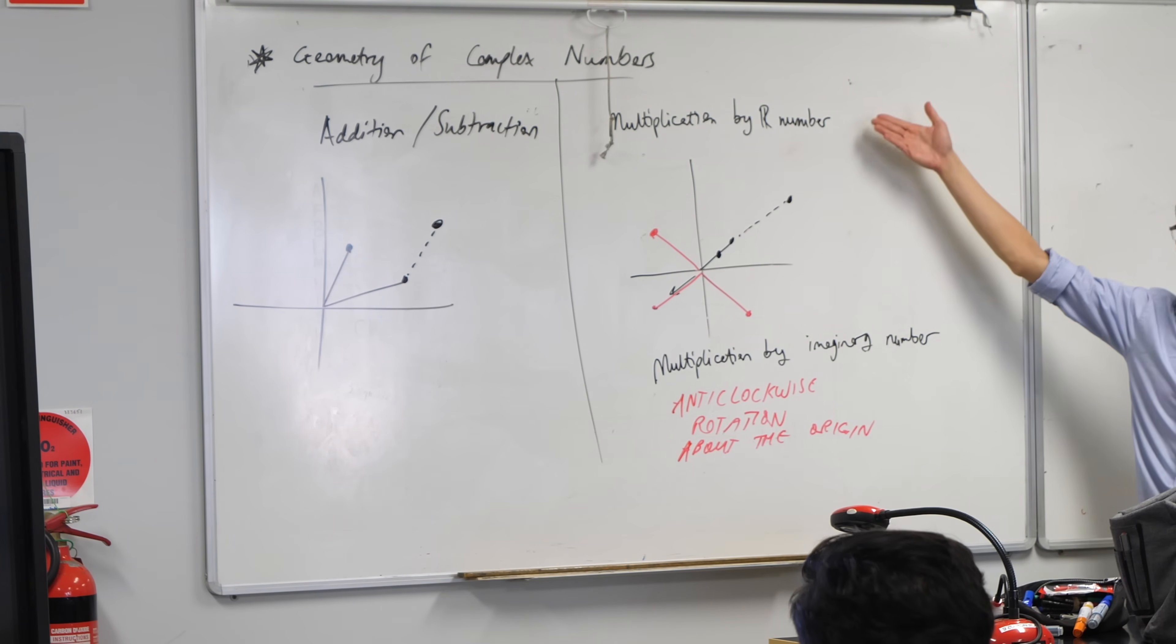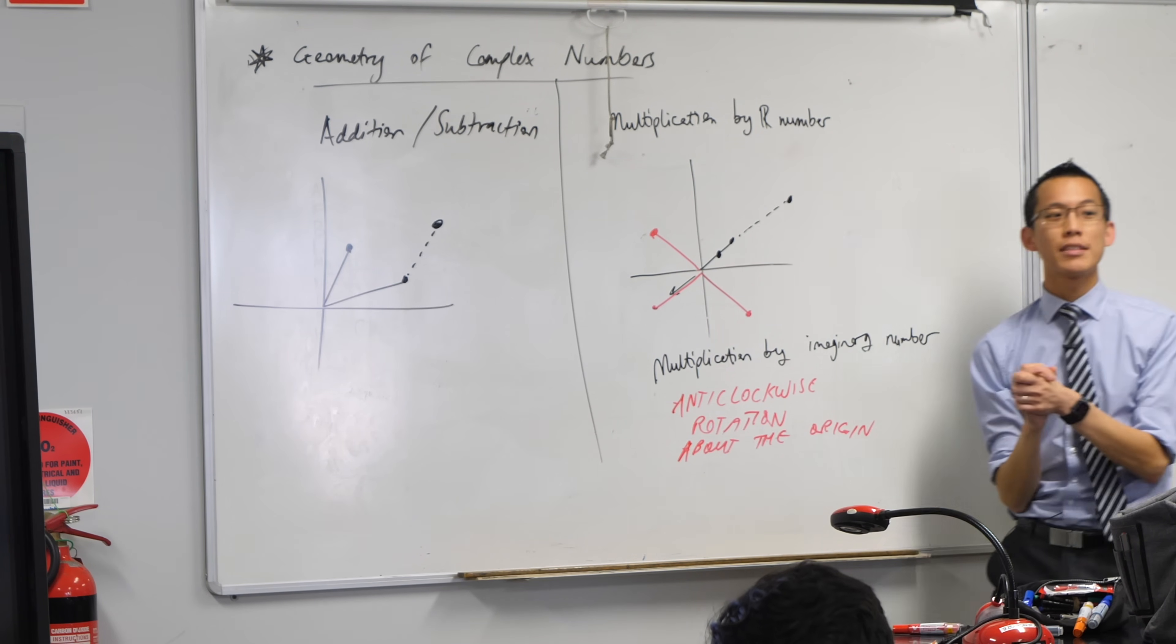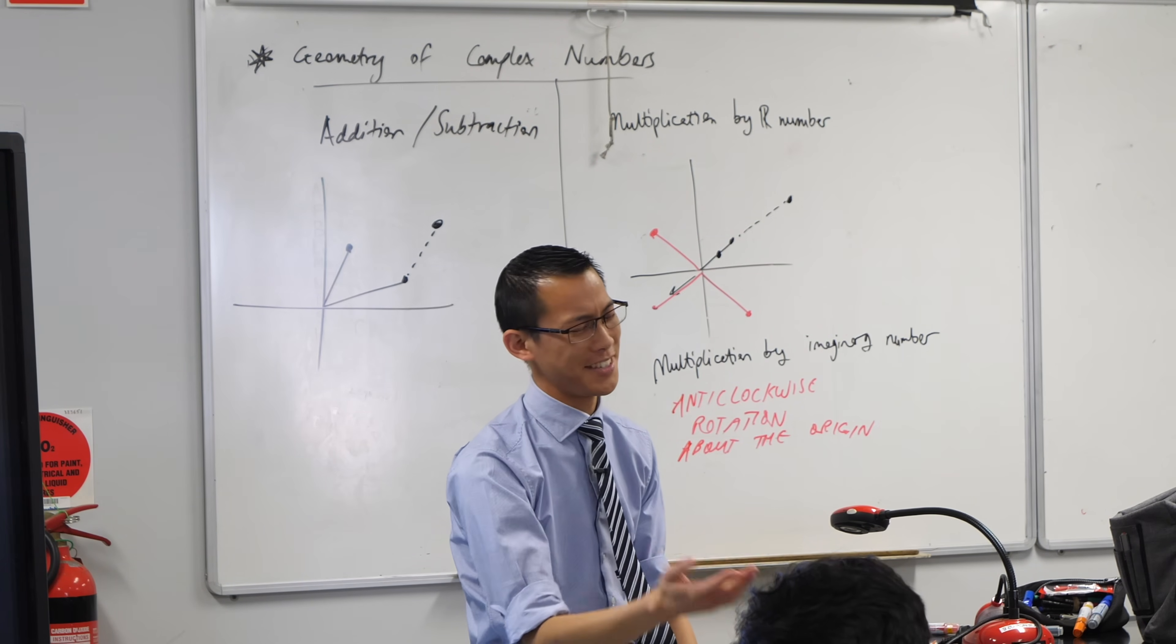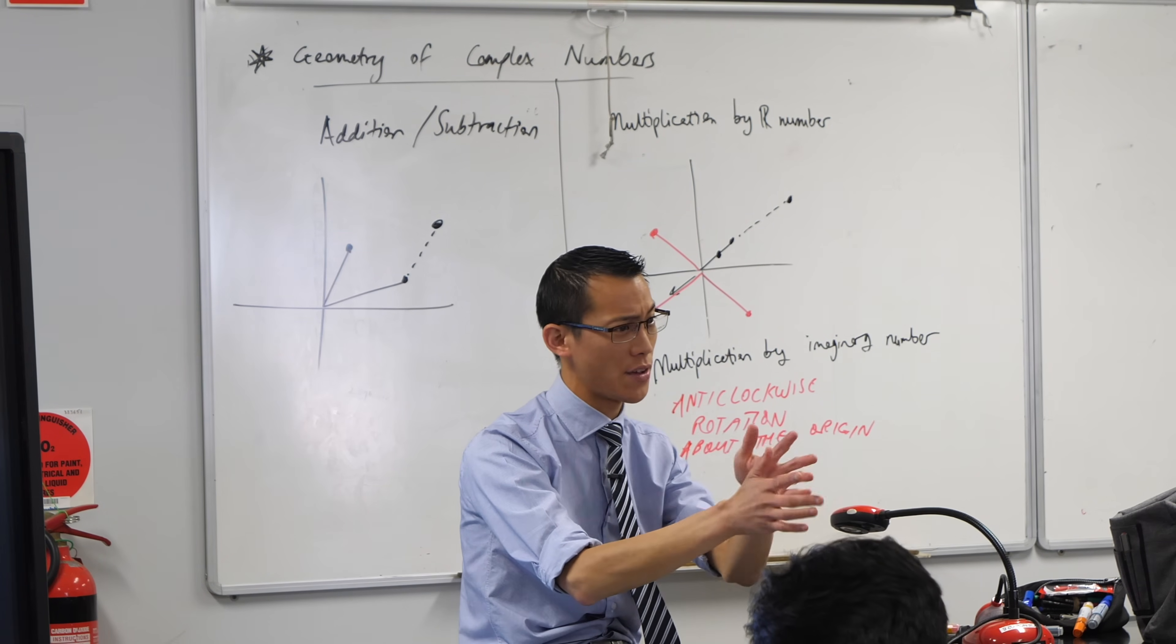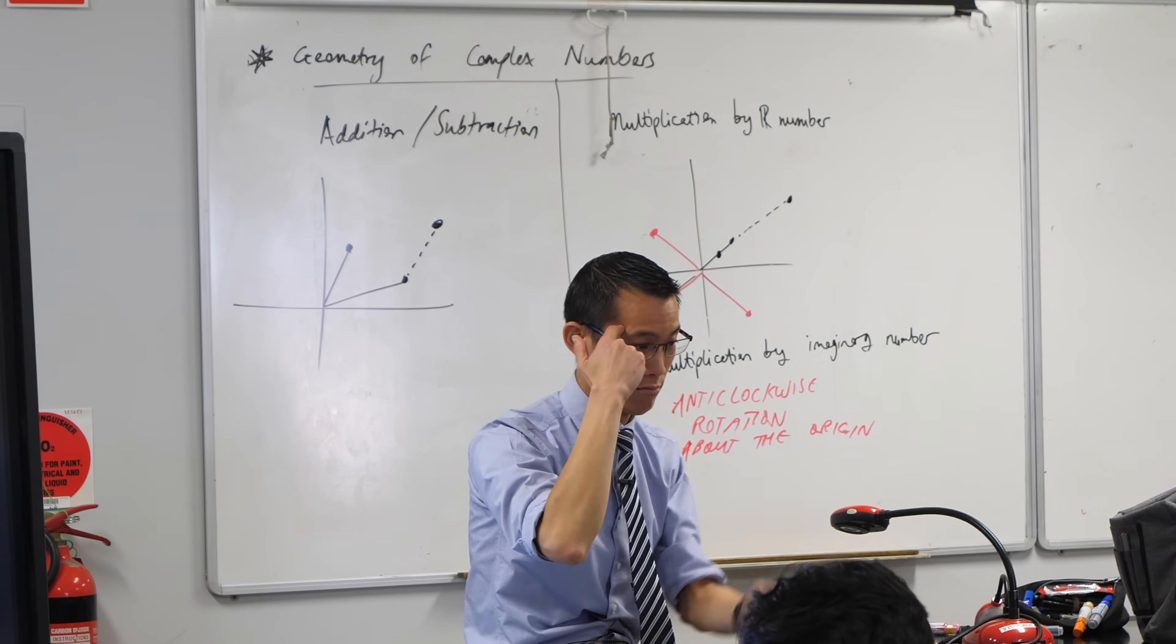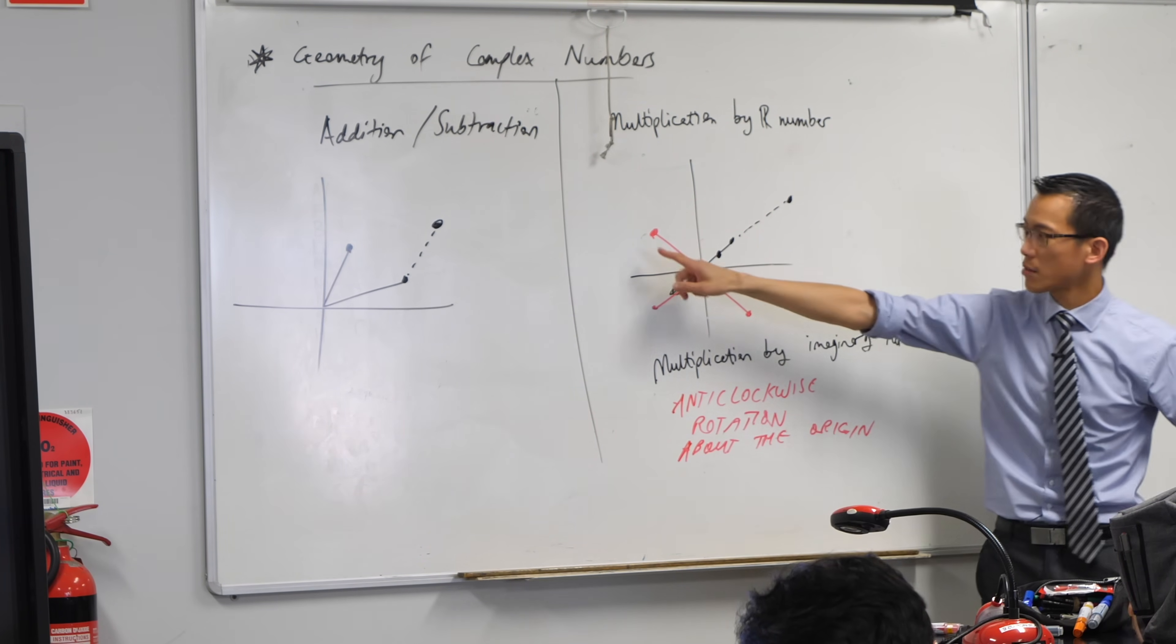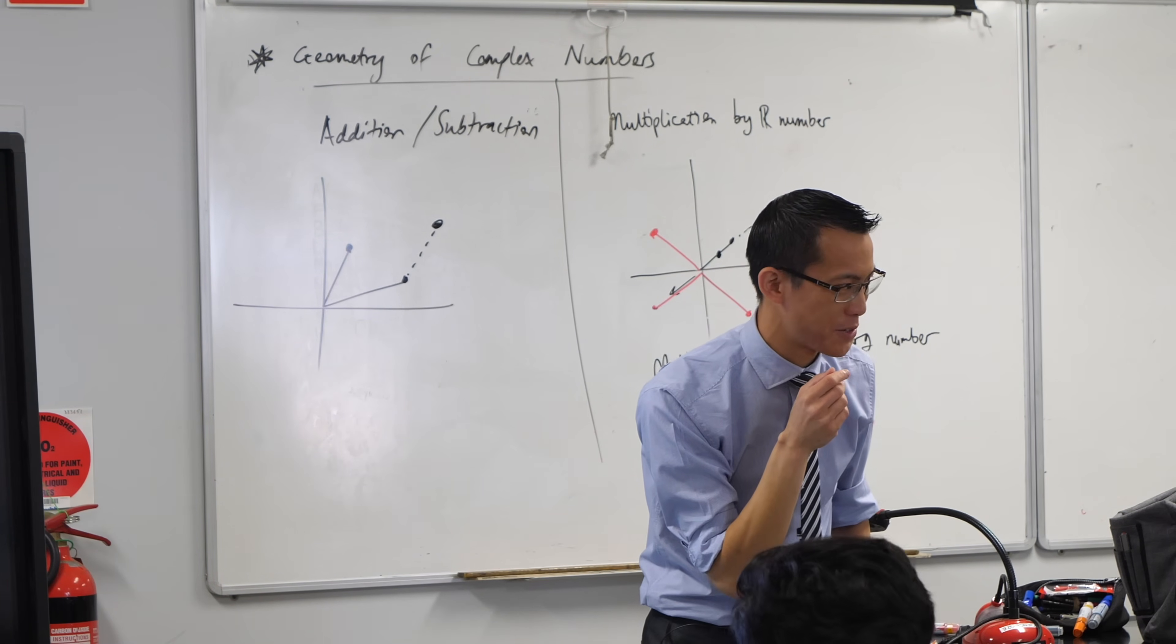But this topic is not called real numbers or imaginary numbers. This topic is called complex numbers, which means we want to see what happens when we combine these. So here's what I'd like you to do. You will shortly need a new complex plane for this. What I'd like you to do is think of a complex number. Any complex number you like. But probably to make things nice for yourself, maybe choose some integer coefficients for the real and imaginary components. And importantly, this is really important. When you think of your own complex number, please think of a different one to the people on either side of you. I want everyone in the room to have a different complex number. Choose one. Write it down.